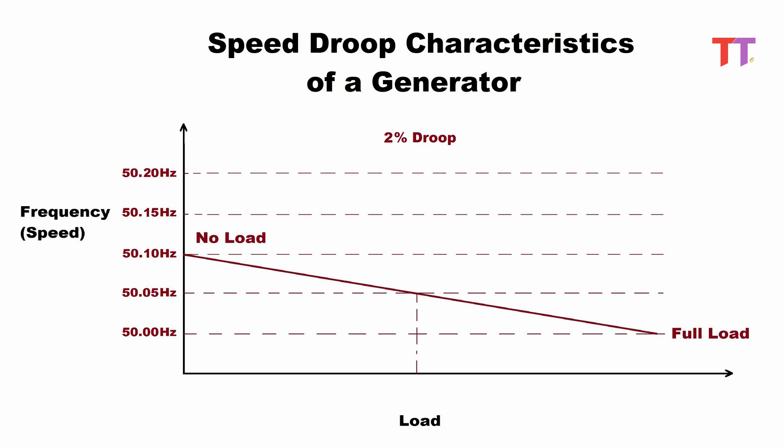We can see that with an increase in load, the frequency — that is, the speed of the generator — decreases. This speed droop characteristic of the generator is used to control its load share in parallel operation.